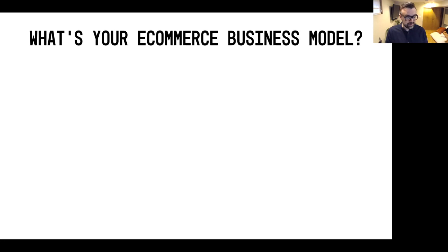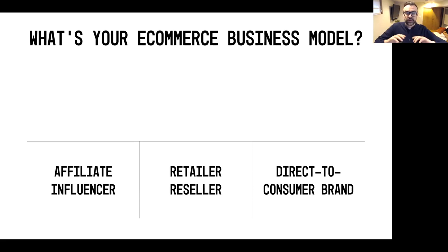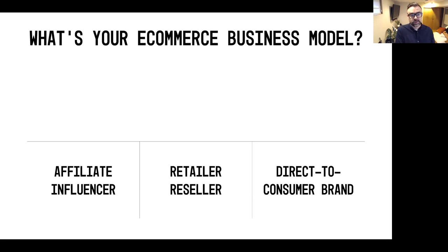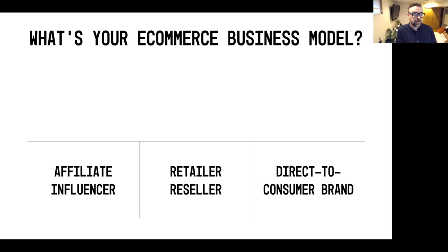What we want to talk about now is identifying your e-commerce business model. There's a wide spectrum of different models. On the far left-hand side, you've got what we would call affiliates or influencers — and this is actually how I got my start in the e-commerce business. I started off as an affiliate. When I say affiliate or influencer, I'm not talking about the 'Hey, look at me on Instagram' type — I'm talking about real people offering real suggestions and recommending products and services.